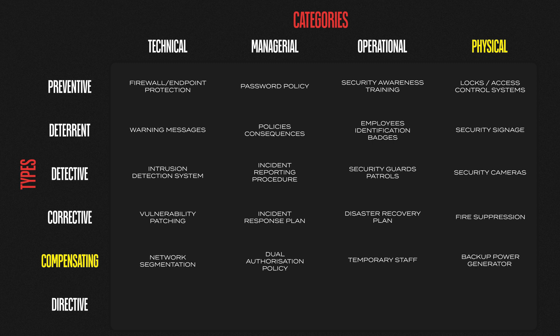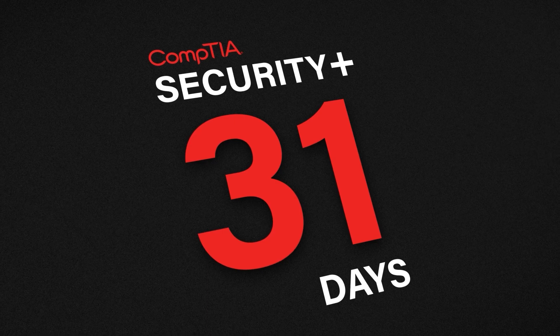Directive controls are guidelines, instructions, and policies to ensure best practices are followed. A technical example is a data protection policy specifying technical standards for storing, encrypting, or handling data. Managerially, adherence to a compliance policy is a directive control. An operational example is a formal user access request process requiring manager approval before access is granted. Physically, signage indicating restricted areas or emergency exit instructions are directive controls.